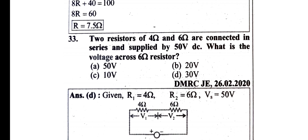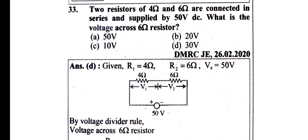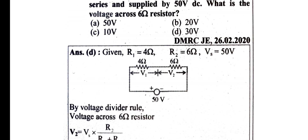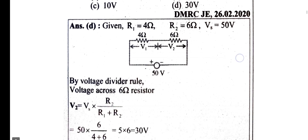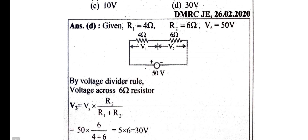Two resistors of 4 ohm and 6 ohm are connected in series and supplied by 50 V DC. What is the voltage across the 6 ohm resistor? We have 4 ohm and 6 ohm in series across 50 V. We have the 6 ohm resistor. Figure out V1, V2. Voltage divider rule. Across 6 ohm is V2; V2 means Vs, the supply voltage.